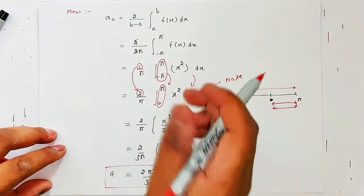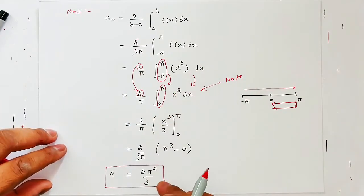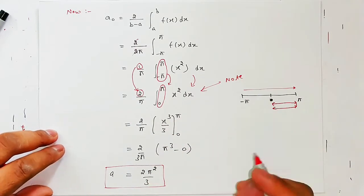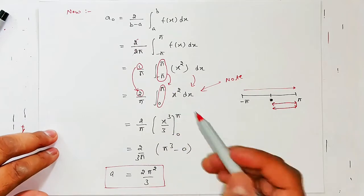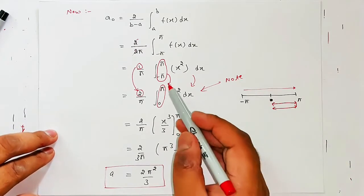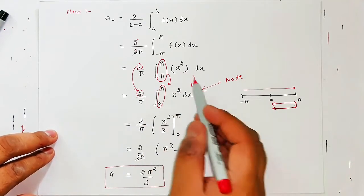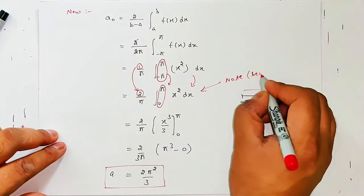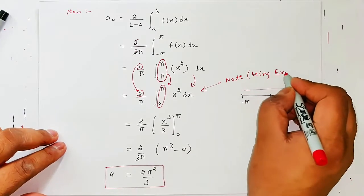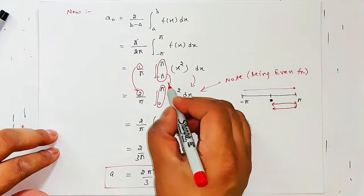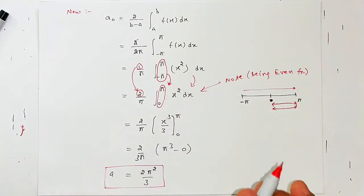Agar aap yeh bhi seedhe chalte integration third step mein, tab bhi answer same aata. But aapko pata hai jab aap negative limit put karte hain toh obviously usko handle karna thoda mushkil hota hai. Toh that's the beauty of this very even and odd function — ki aapke kuch elements toh honge 0, aur baaki jo integration bachi, aap usme concept ka faayda utha sakte hain. Being even function, toh even function ki help se yeh faayda hua.